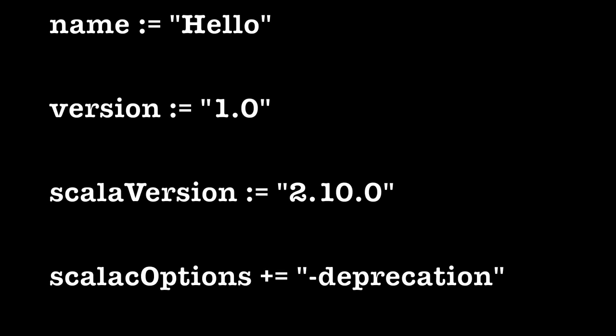I want to interrupt this planned video for just a few moments to make something really clear. You don't need a build.sbt file for very simple SBT projects. You can just create the directory structure, then run your SBT compile and run commands without even having a build.sbt file. However, in the real world you're going to have a build.sbt file like the one I showed. But I just want to be clear that for very simple projects, you don't really need one.